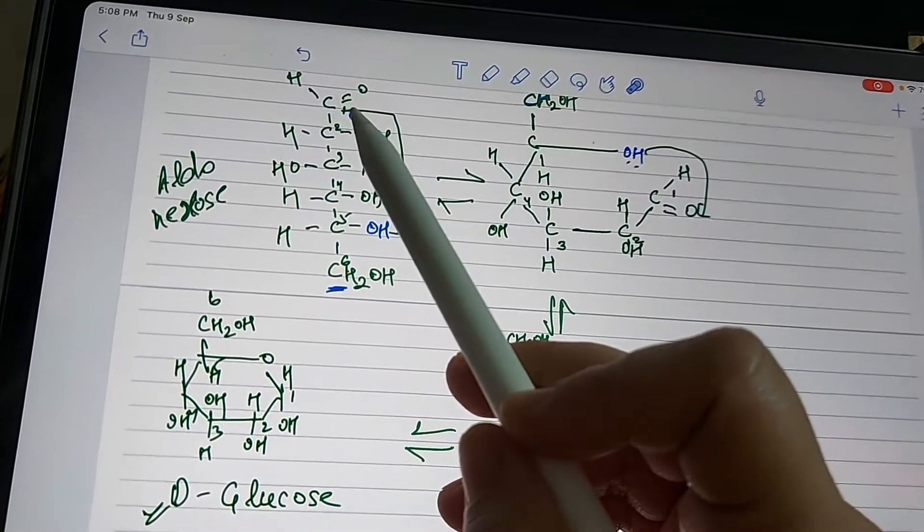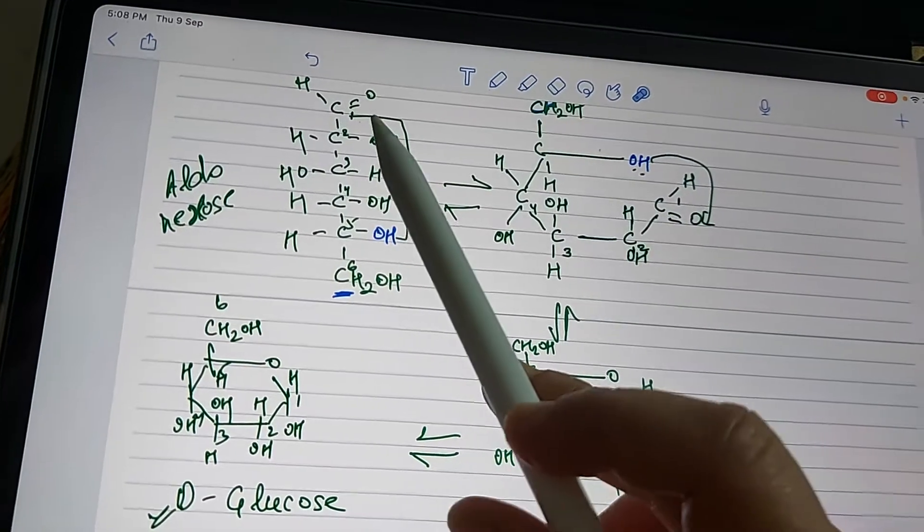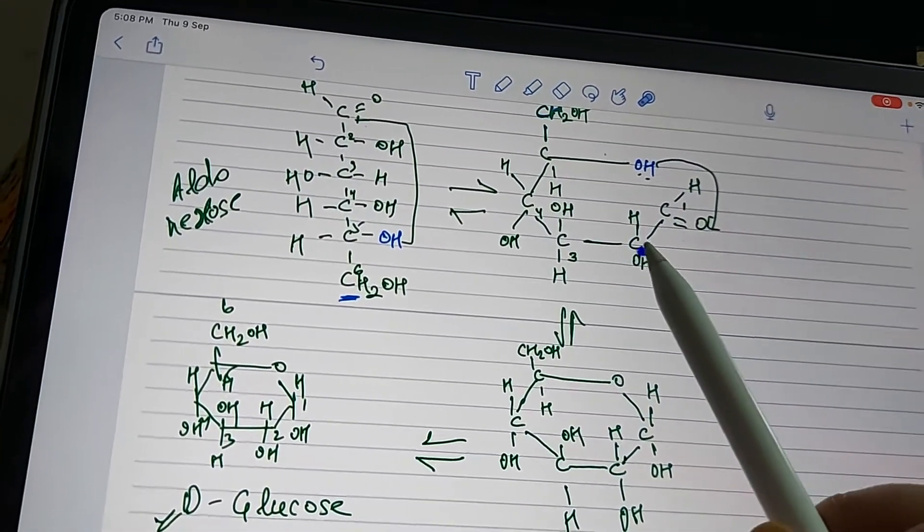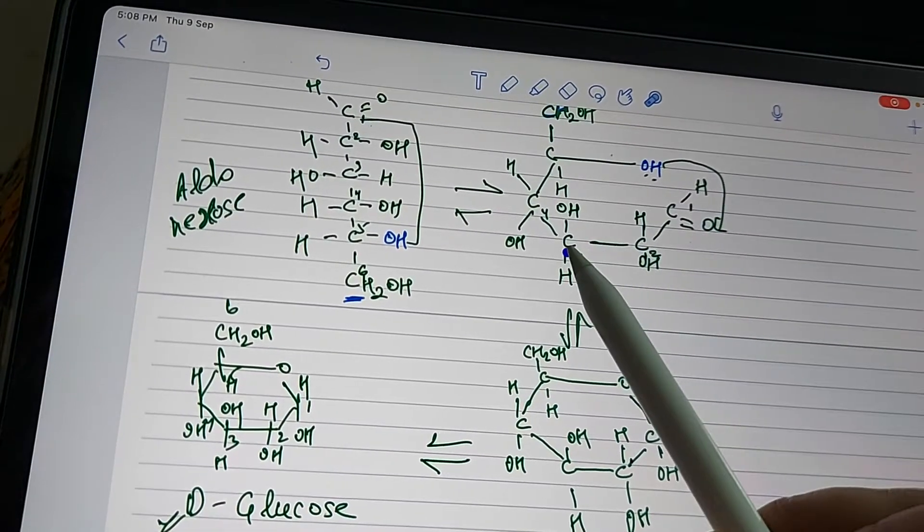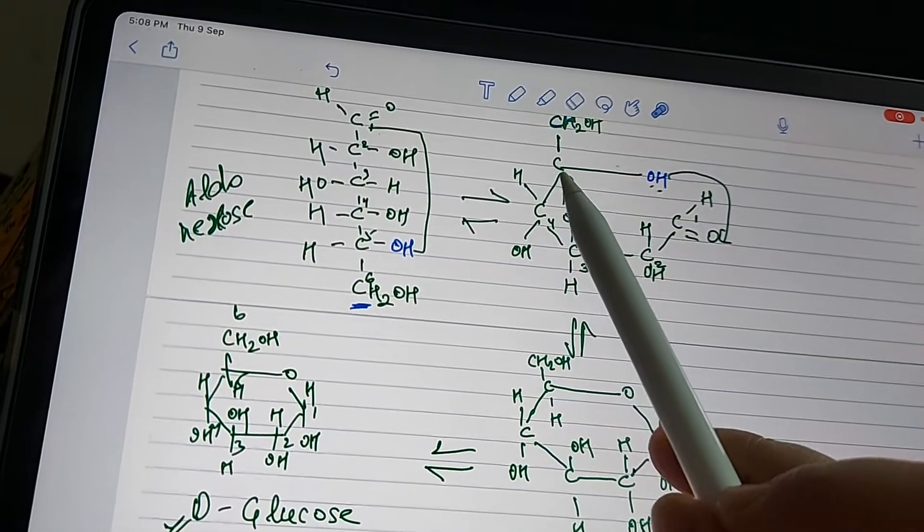Now for the inter-conversion, we can see the first carbon has to combine with the fifth carbon. So the first carbon is here—this is C double bond O. This is the second carbon with H-OH, third carbon with OH-H, fourth carbon again with H-OH.